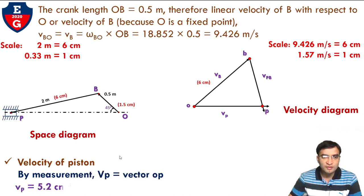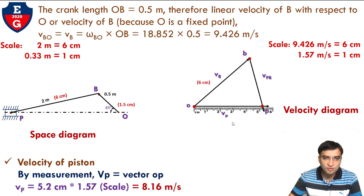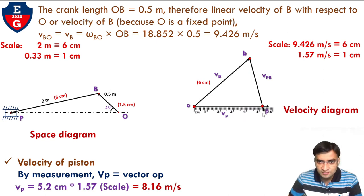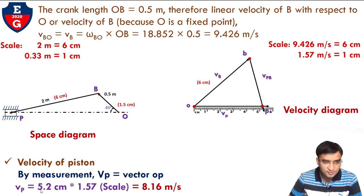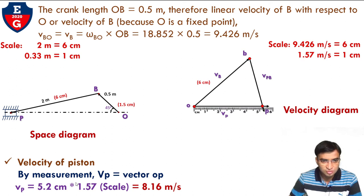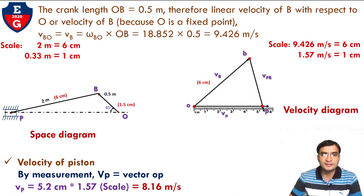Our goal is to find the velocity of the piston VP, which is given by vector op. Measuring vector op gives 5.2 cm. Multiplying by the scale: VP = 5.2 × 1.57 = 8.16 m/s. So the velocity of the piston is 8.16 m/s.